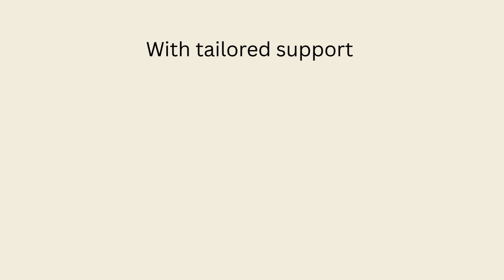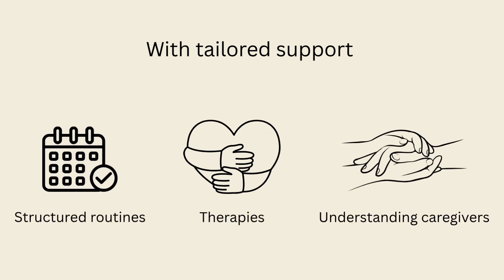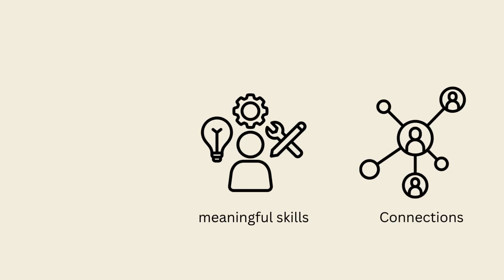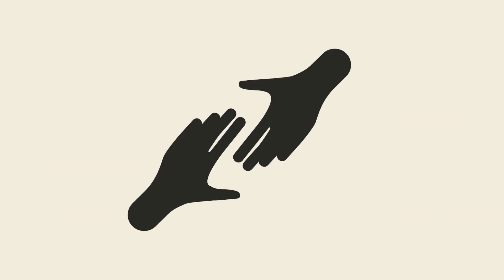With tailored support — such as structured routines, therapies, and understanding caregivers — people at Level 2 can build meaningful skills, connections, and independence, though the need for substantial help typically continues throughout life.